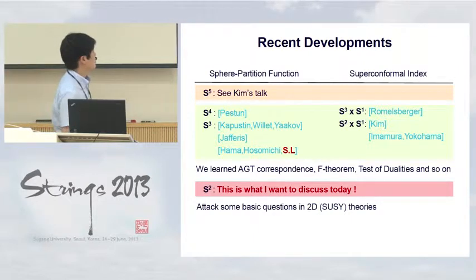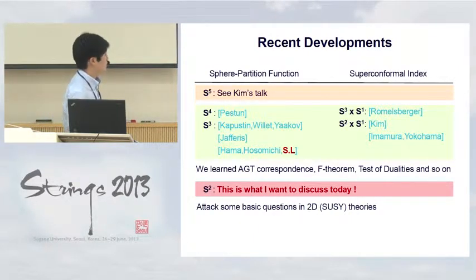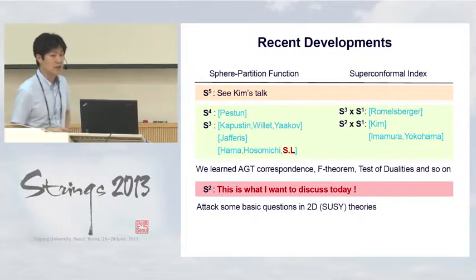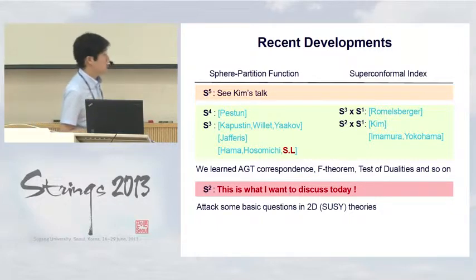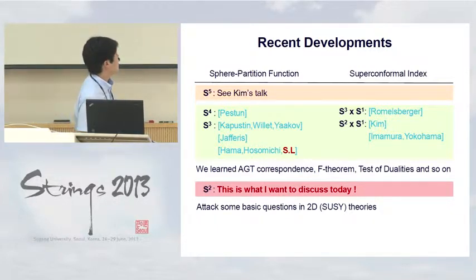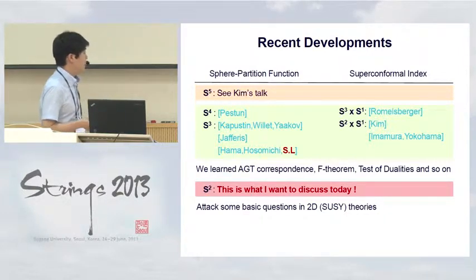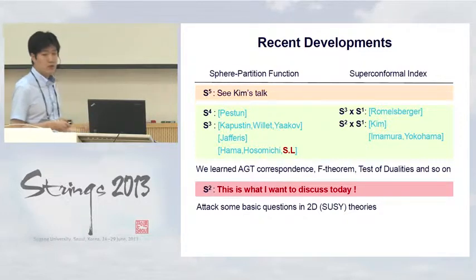Using these new exact results, we learned about the AGT correspondence, F-theorems, and precision tests of various dualities and many other things. Therefore, it's quite natural to keep pursuing a similar line of inquiry either in higher dimensional theories or lower dimensional theories such as two dimensions, and this is what I want to present today.